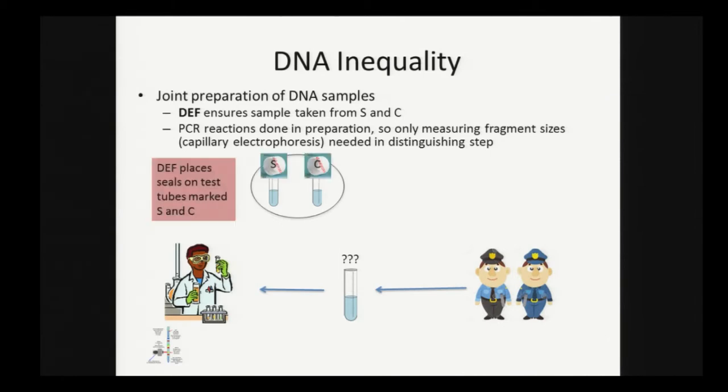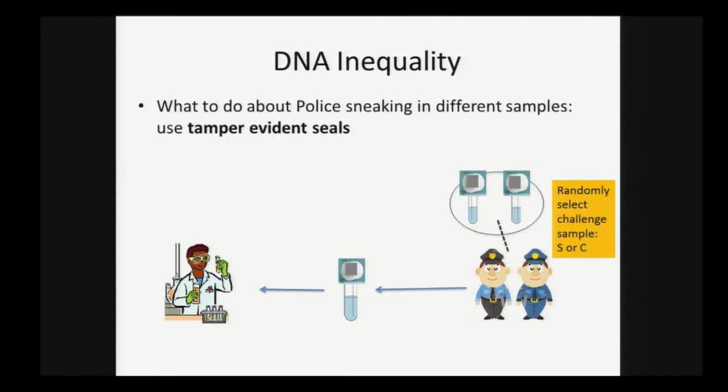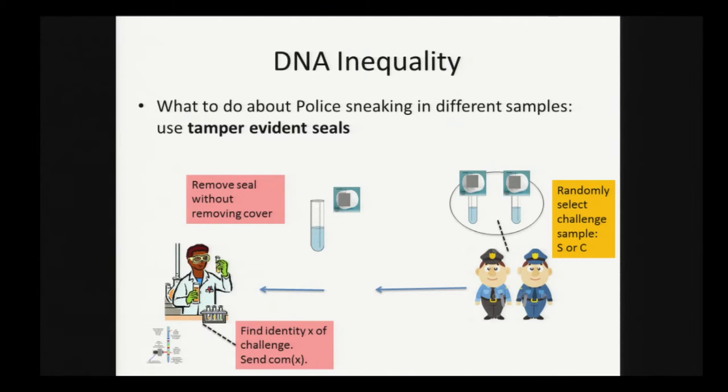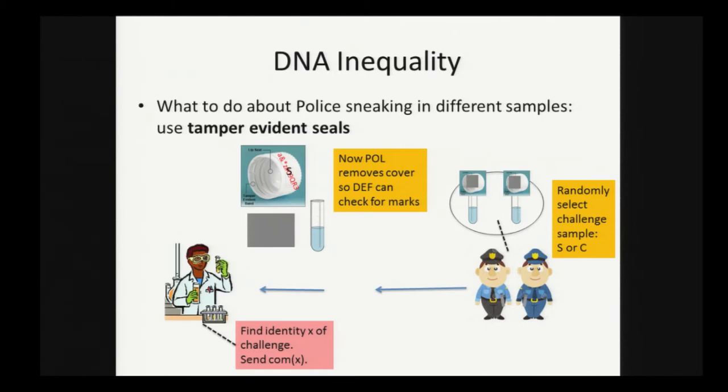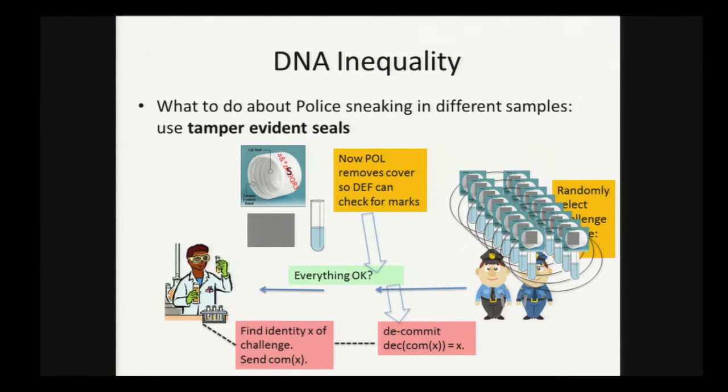The protocol will proceed as follows. The defender places the seals on the test tubes and the police covers them, so now they're indistinguishable. The police will randomly select a challenge sample, hand it to the defender, removes the seal without removing its cover, uses the device to identify the challenge, send only a commitment to the challenge. But before decommitting should remove the cover on the seal, check that everything is okay, it hasn't been replaced, and if everything is okay then decommit. You can repeat this to amplify the soundness. You can batch them all at once into k independent samples.